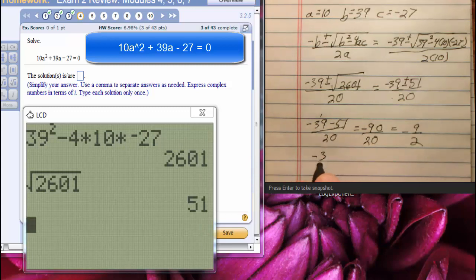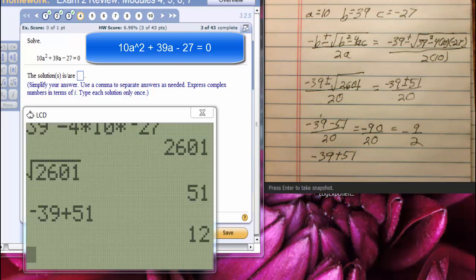Let's see, negative 39 plus 51. I am going to use the calculator for that. Negative 39 plus 51, enter. That'll be 12.